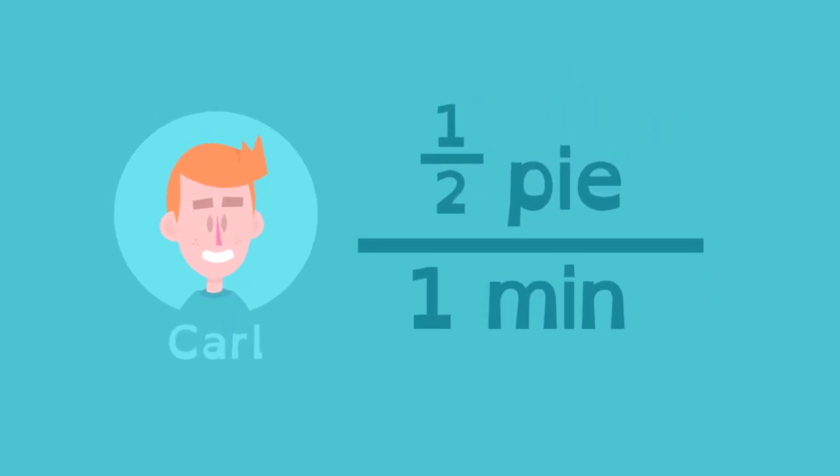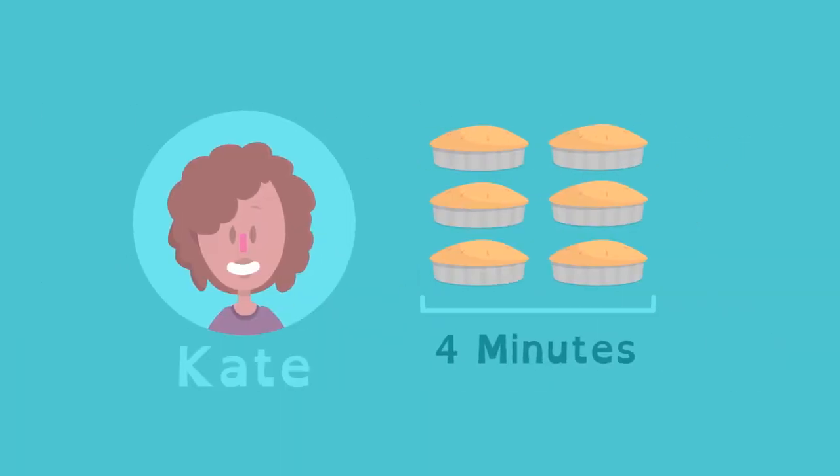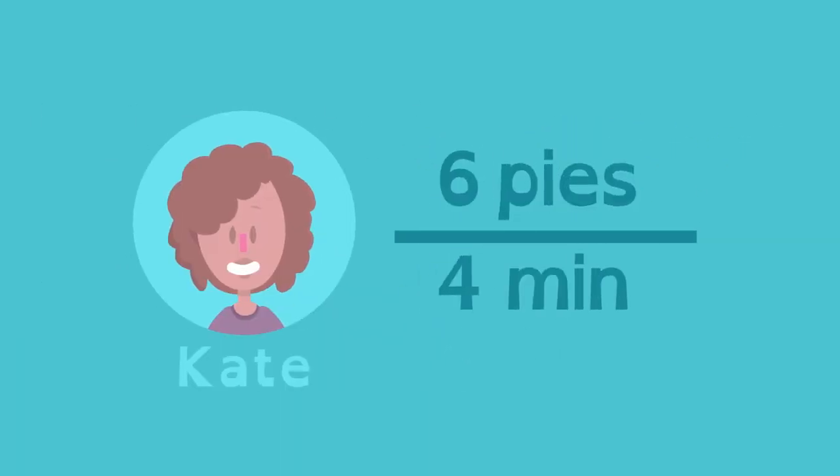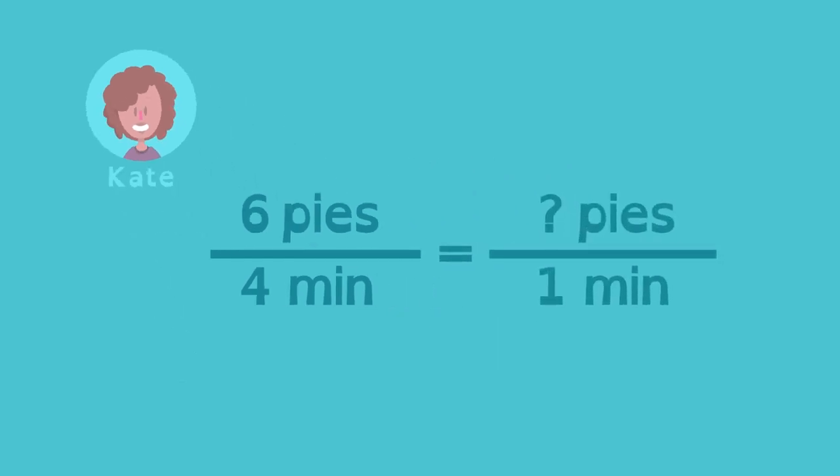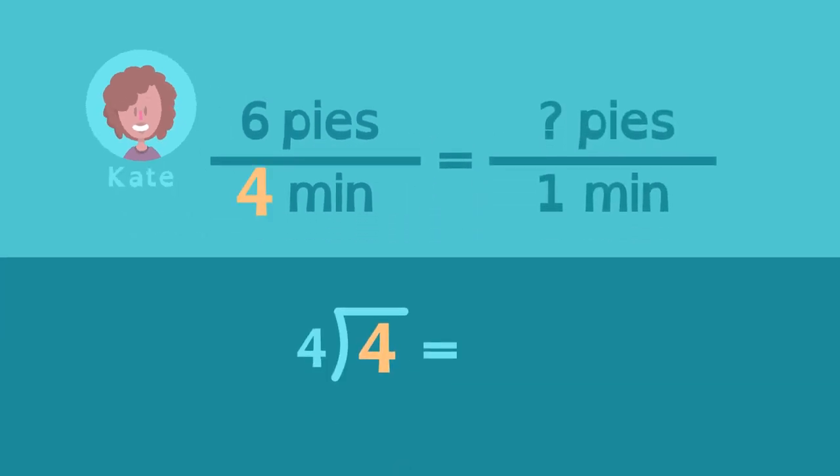We can calculate Kate's unit rate too. She can eat six pies in four minutes. How many pies can she eat in one minute? Four divided by four is one, so six must be divided by four.